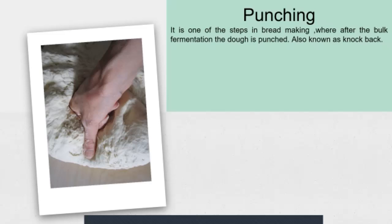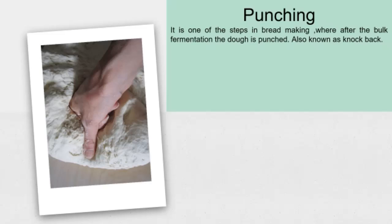The next word is punching. It is one of the steps in bread making where, after the bulk fermentation, the dough is punched. It is also known as knockback. This process helps to expel the air, which enables distribution of the yeast. The temperature of the dough is equalized and it also helps to soften the gluten.